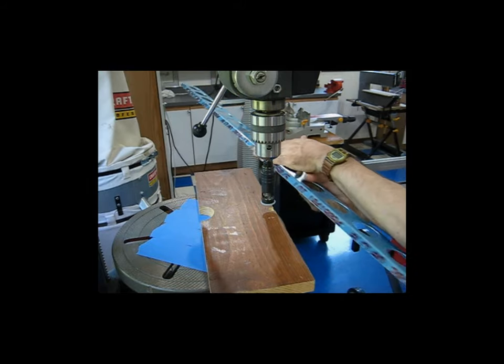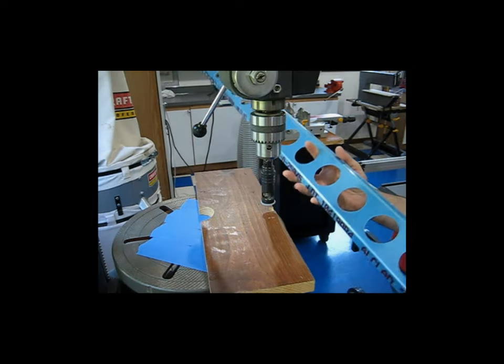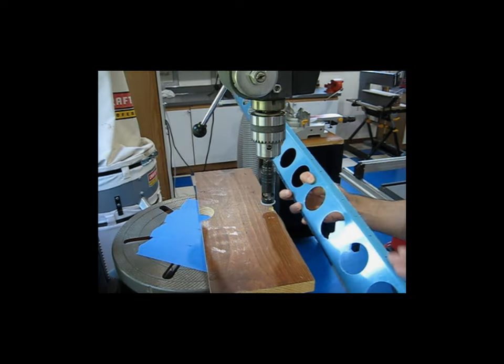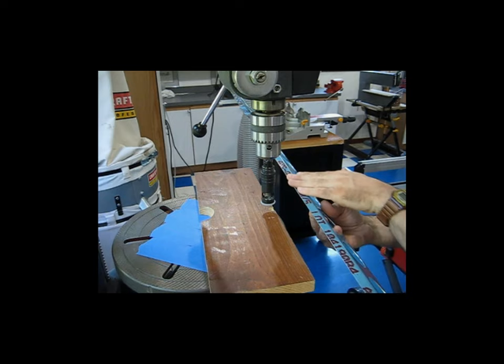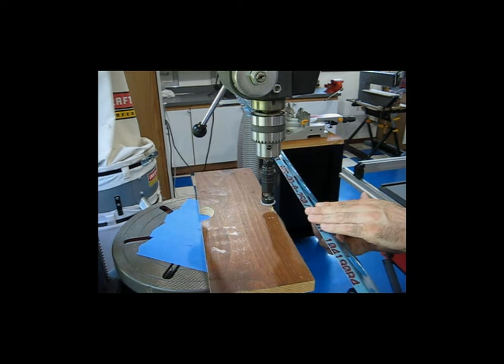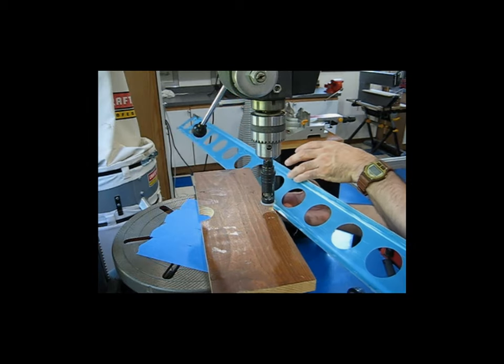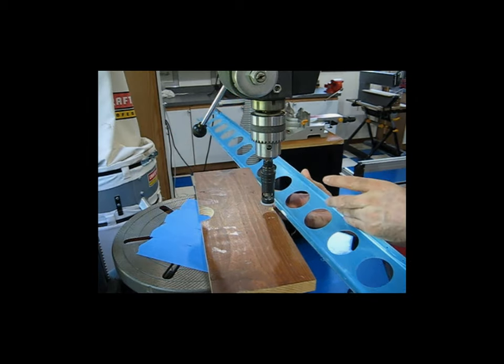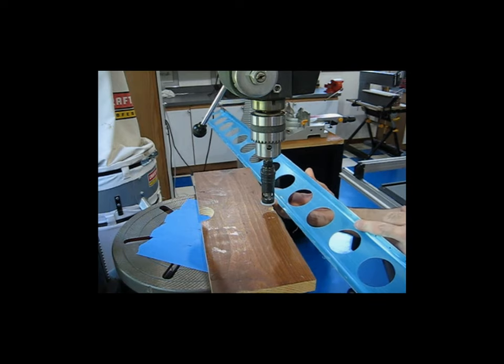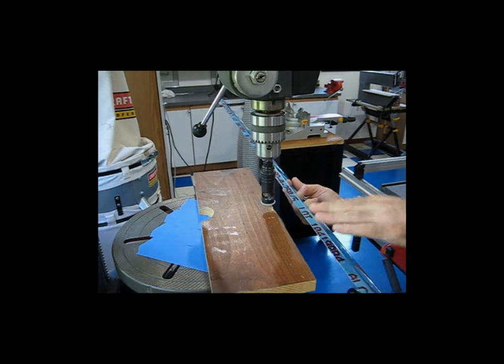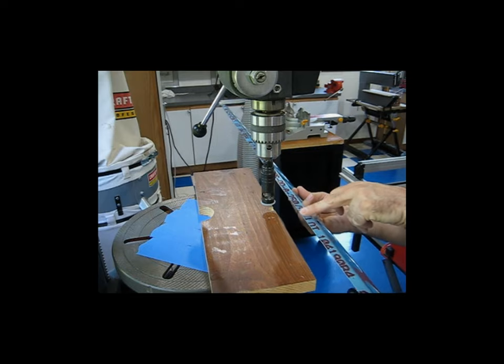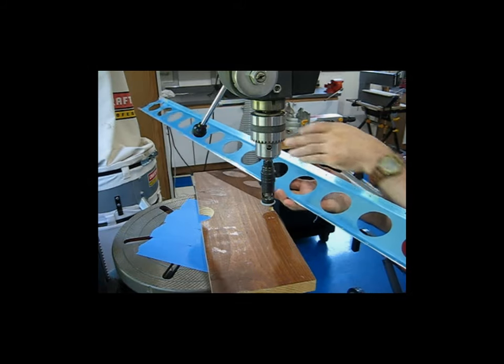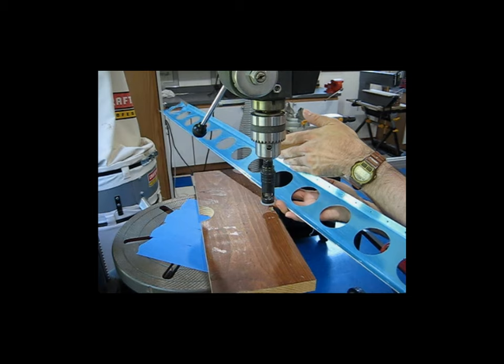This edge here is the bottom skin edge. This edge is the edge that attaches to the rear spar of the wing. You want to make sure that you countersink this top of the skin side. Back here, this is where the piano hinge goes. So this needs to remain flat.